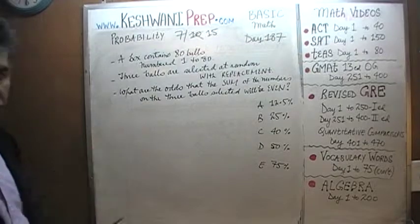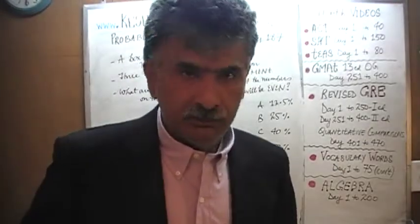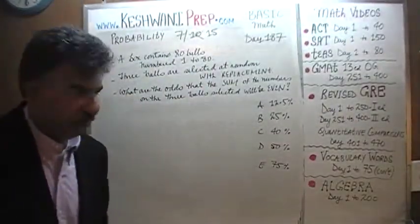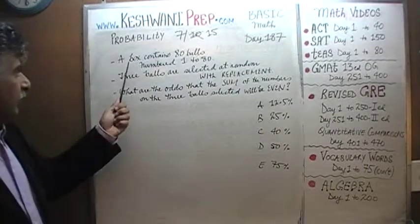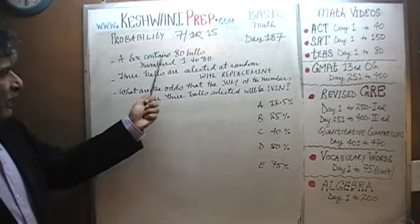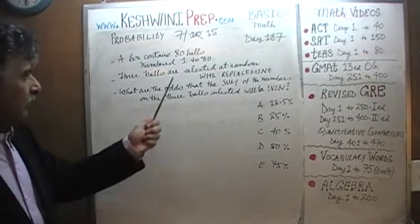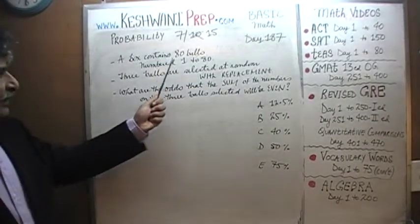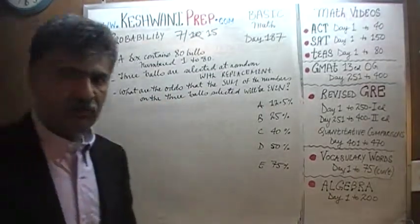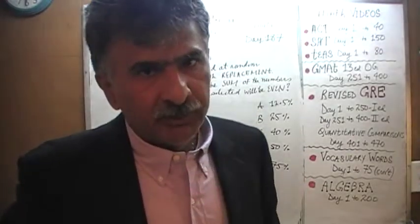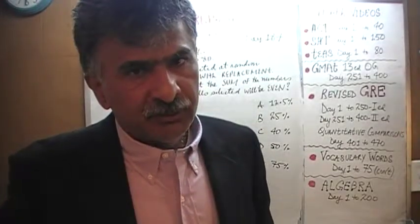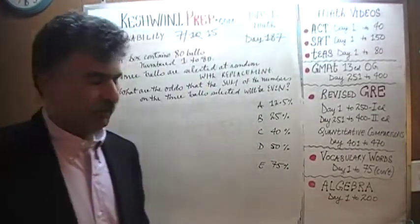Here's the problem — it's already on the blackboard. Let's take a look at it. Number 7 in the series of 15. We are told that a box contains 80 balls, numbered 1 through 80. Each ball is given a distinct number 1 through 80.